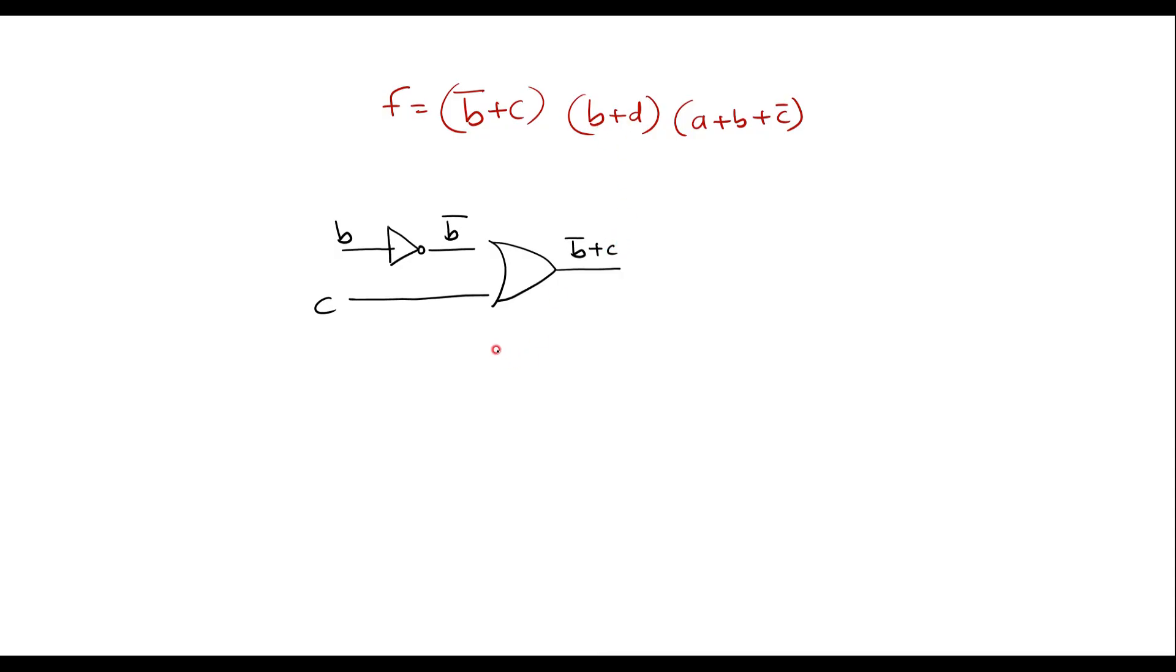Similarly, b, d, I need one more OR gate. Inputs are b. Another input is d. That is b and d and a plus b plus c bar.